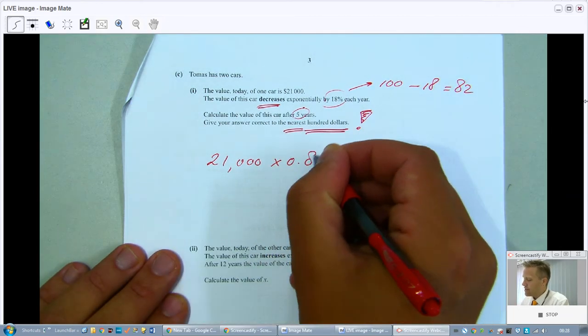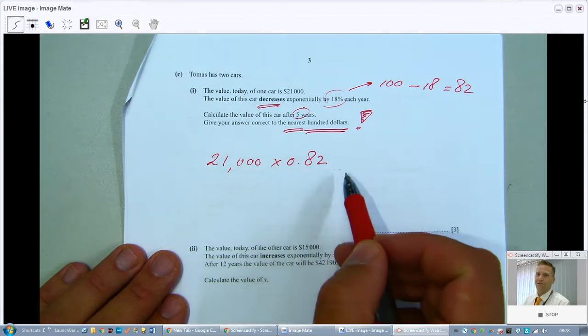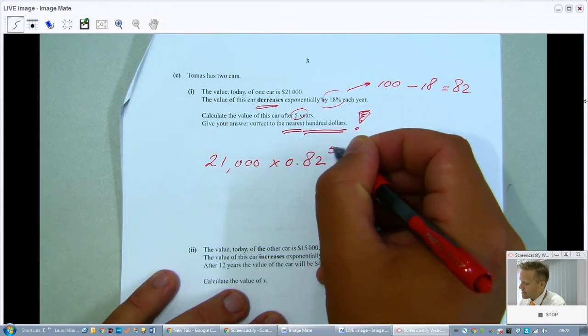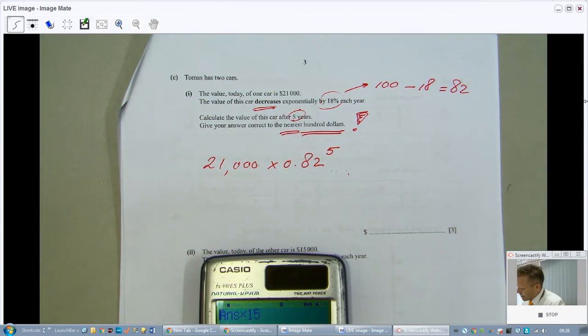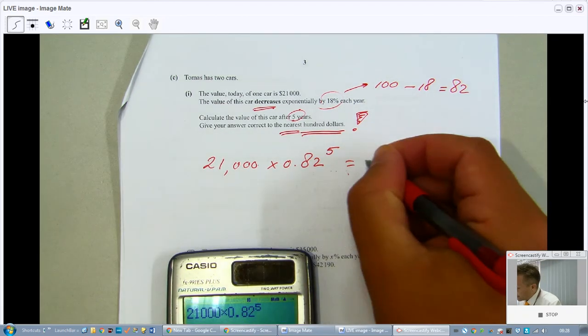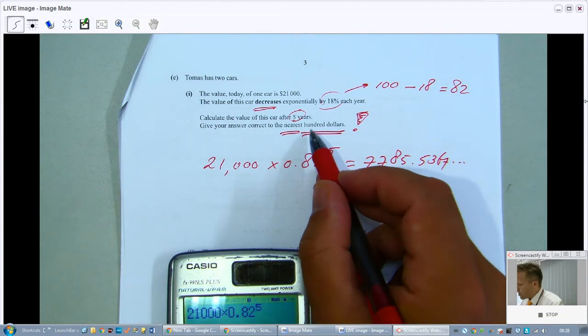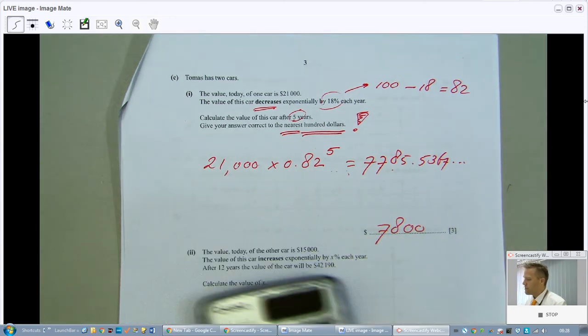Calculate the value of the car after five years and give your answer correct to the nearest $100. Every year the price decreases by 18%. So, the $21,000 after one year will be worth only 82%. Because the 100% will be decreased by 18%, which is 82%. So, $21,000 times 0.82 will give me the price of the car after one year. But it's not after one year. It's after five years. Or easier and definitely quicker is to say times 0.82 to the power of five. While I work that out, I'll tell you, if you want to be rich, don't buy an expensive car. Because cars will cost you loads of money. The hundred is the seven. The next one is an eight. So, that seven goes up to 7,800.